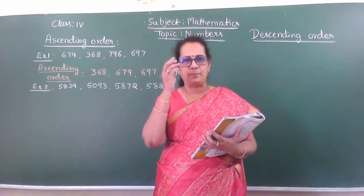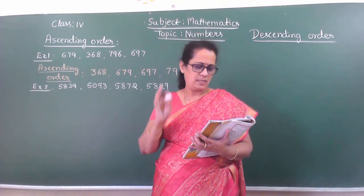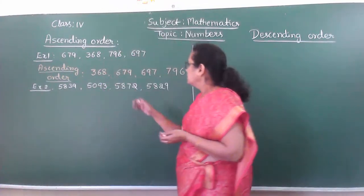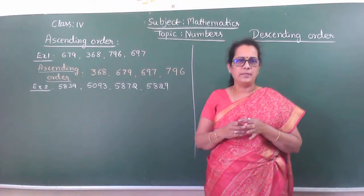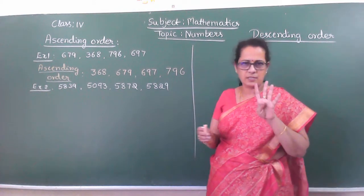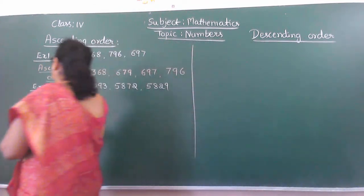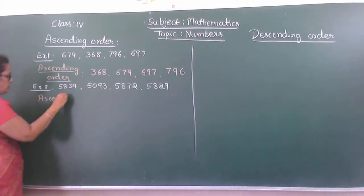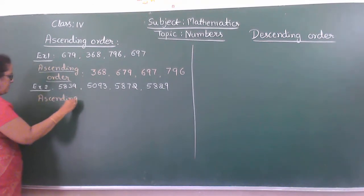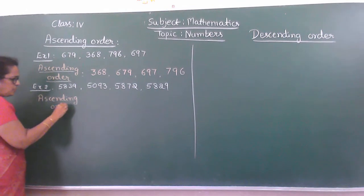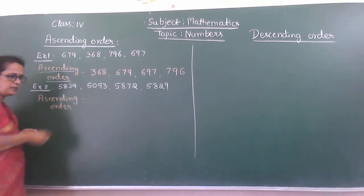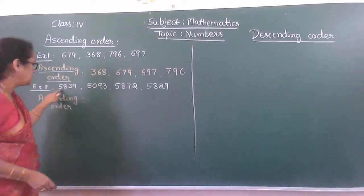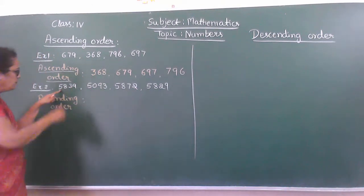So that you can easily identify the place value numbers. There are 4 numbers, 4-digit numbers. It comes in ascending order. As I told you, what is meant by ascending order? From smallest number to biggest number. First you go through the thousands place number: 5, 5, 5, 5.